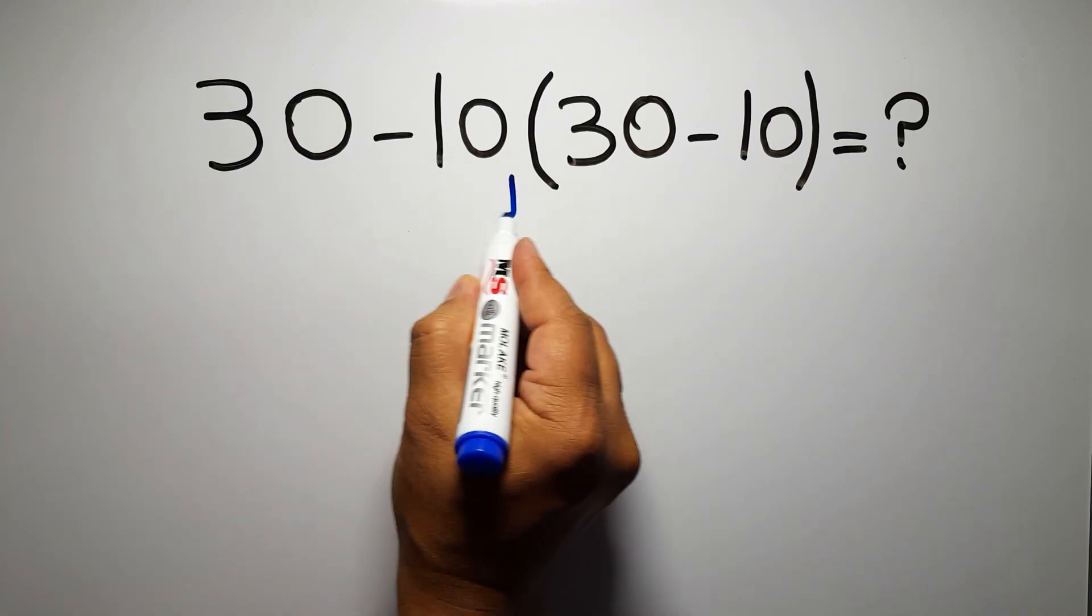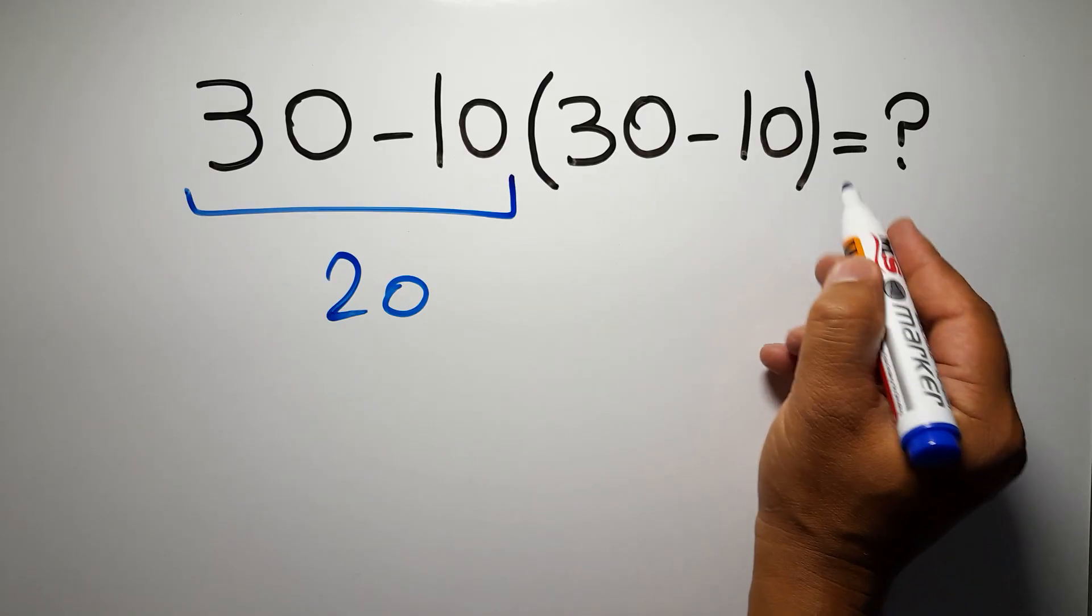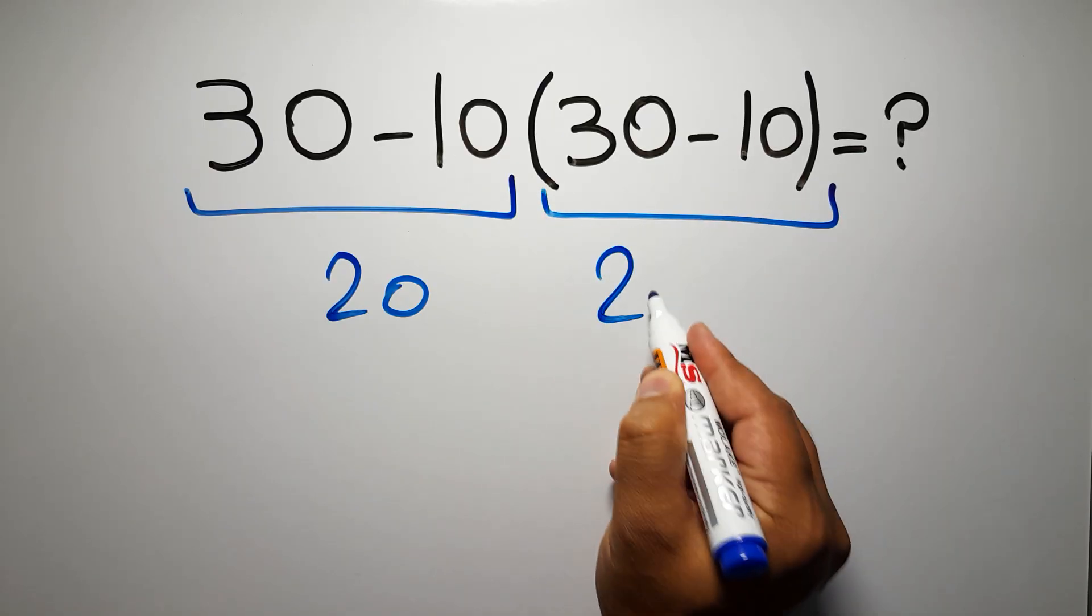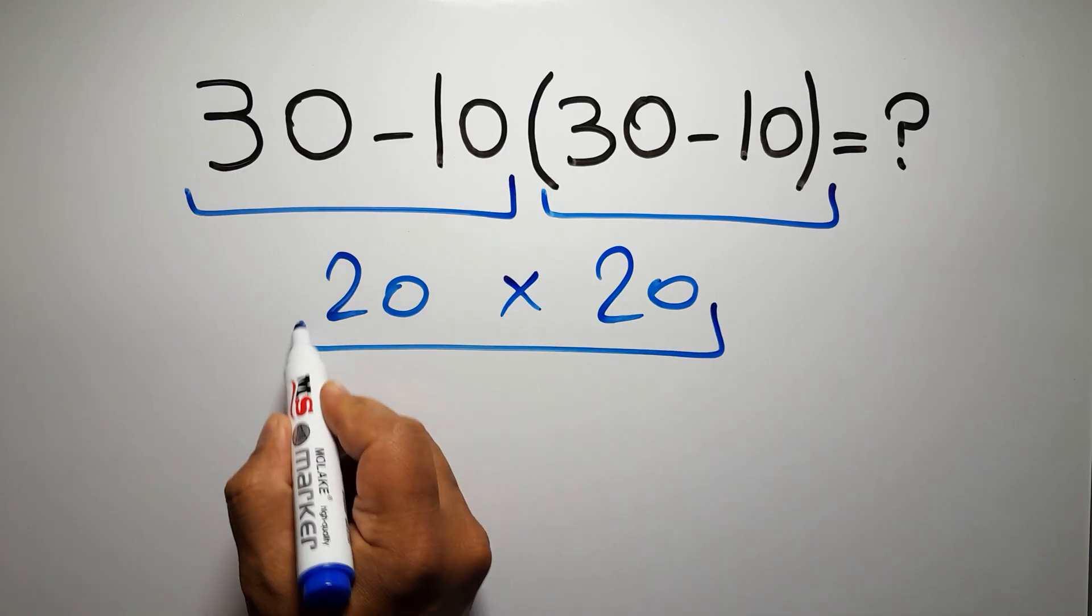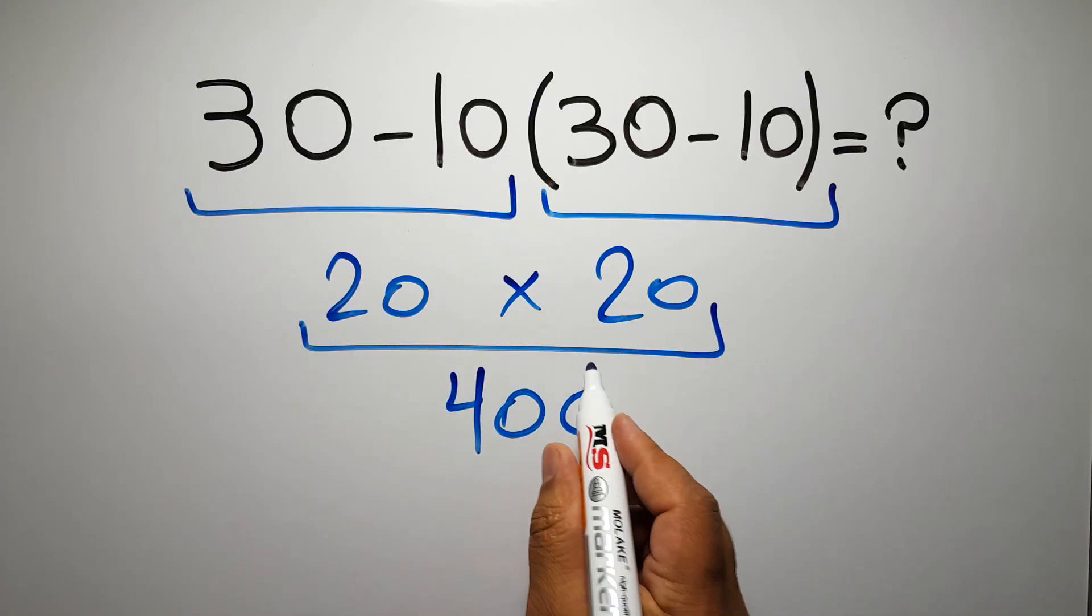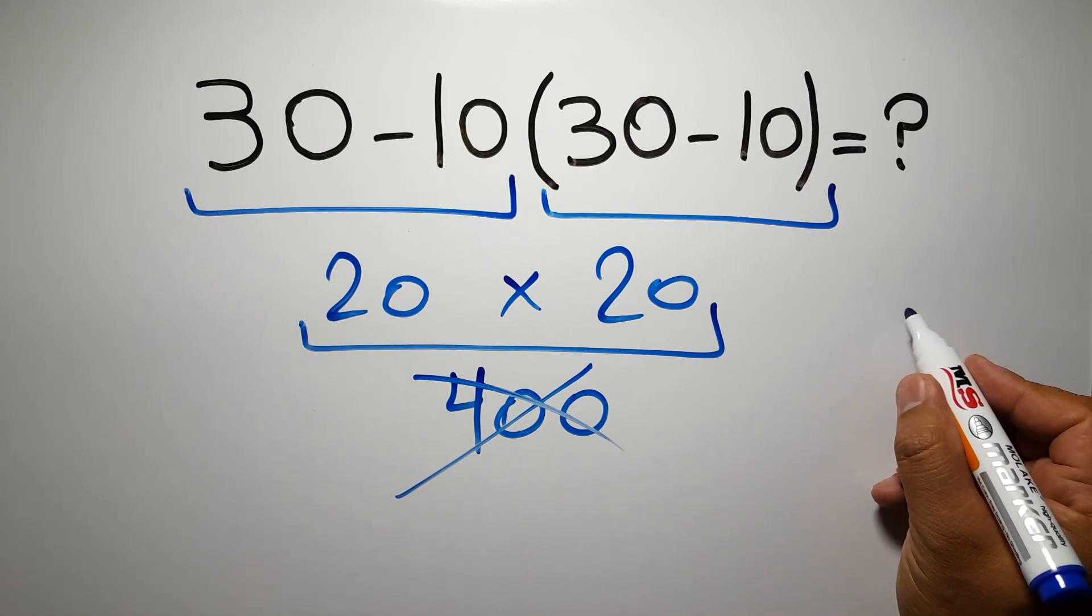30 minus 10 gives us 20, and again here we have 30 minus 10, so 20 times 20 gives us 400. But this answer is not correct because according to the order of operations, first we have to do...